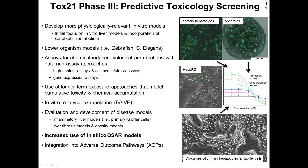Additional phase three goals include developing longer-term exposure approaches that model cumulative toxicity over lower dose longer exposure and accumulation of chemicals, developing methods for extrapolating in vitro data into actual human relevance, evaluation of disease models such as liver fibrosis and obesity, increased use of in silico QSAR models — which is what I'm going to talk about today — and integrating all this into adverse outcome pathways.